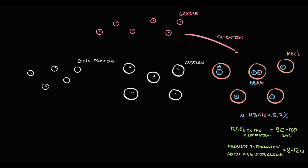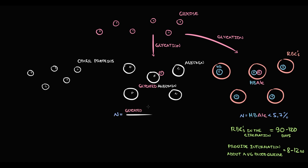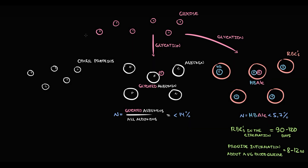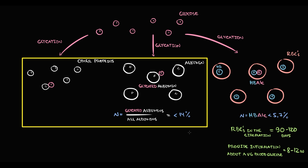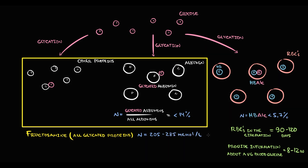In clinical practice this is extremely important because from a single value we can know what the average blood glucose level was for the past 3 to 4 months. Glucose can also bind to albumins, and glycation of albumins results in formation of glycated albumins. In clinical practice we use the ratio of glycated albumins to all albumins, which should be less than 14%. Similarly, glucose can glycate other proteins too, and the value that reflects the fraction of glycated proteins from total protein count is fructosamine. In normal condition, fructosamine level is between 205 and 285.